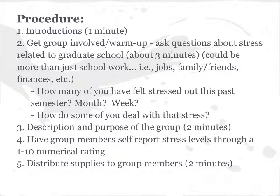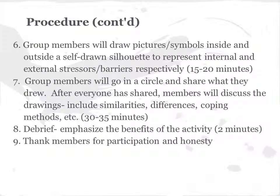After completing the stress scale, the leaders can give the supplies to the group. Once distributed, the group members will draw pictures, symbols, and write words inside and outside of the self-drawn silhouette. Drawing inside the silhouette will represent internal stressors, while drawing outside will represent external stressors or barriers. Internal stressors can be anything going on inside a person's mind or body, such as emotional thoughts or feelings. External stressors are more like money or a physical environment. Once the group completes their drawings, they will sit around a table and share what they drew, prompted by the leader to look for similarities, differences, coping methods, and anything else that may come to mind. Lastly, there will be a debriefing session that includes processing questions and the benefits of the activity.